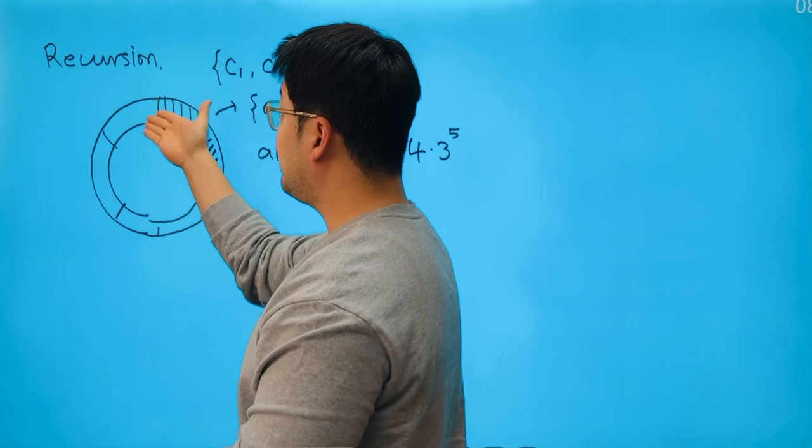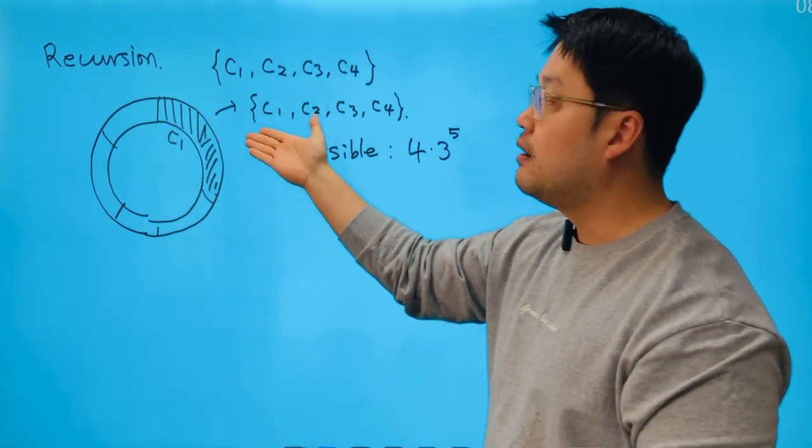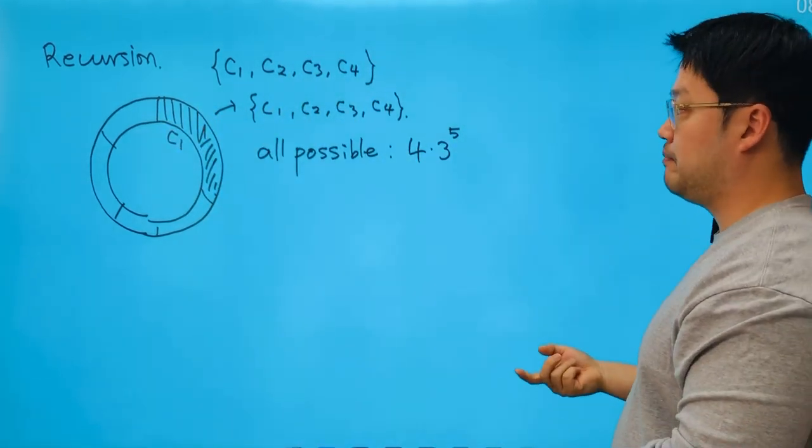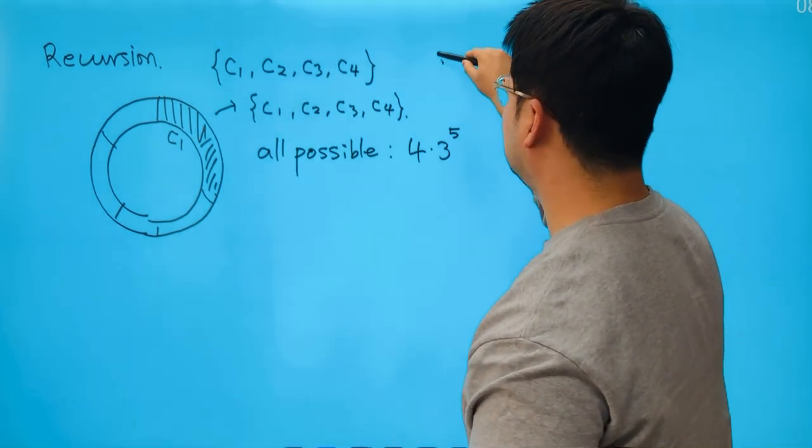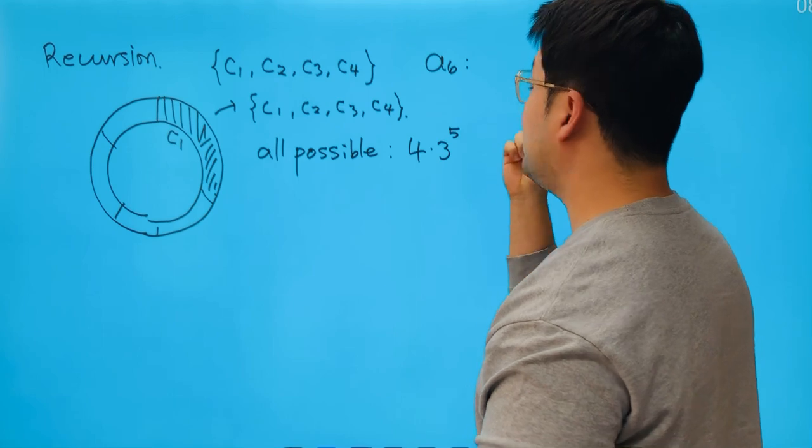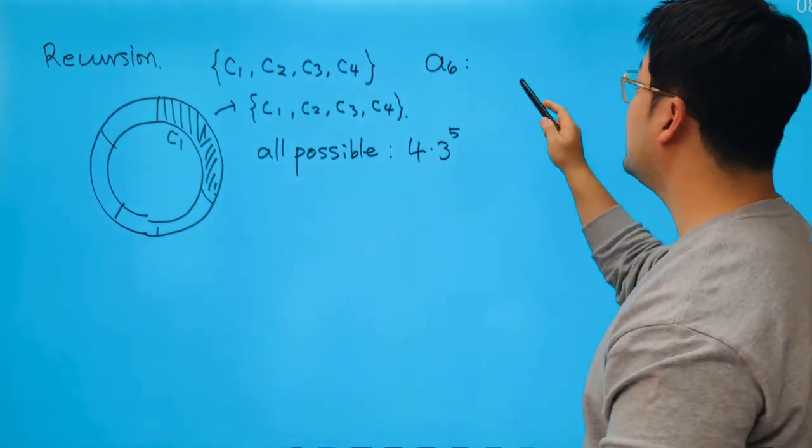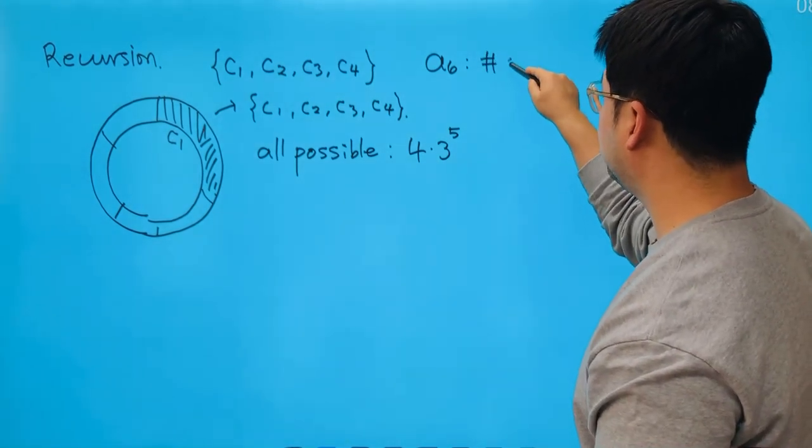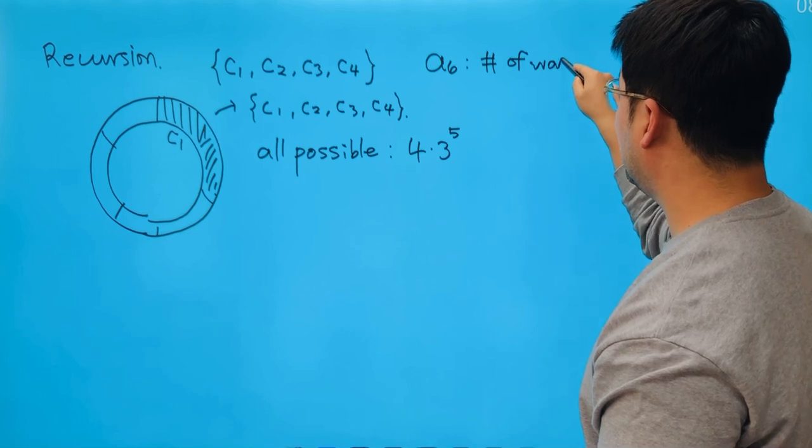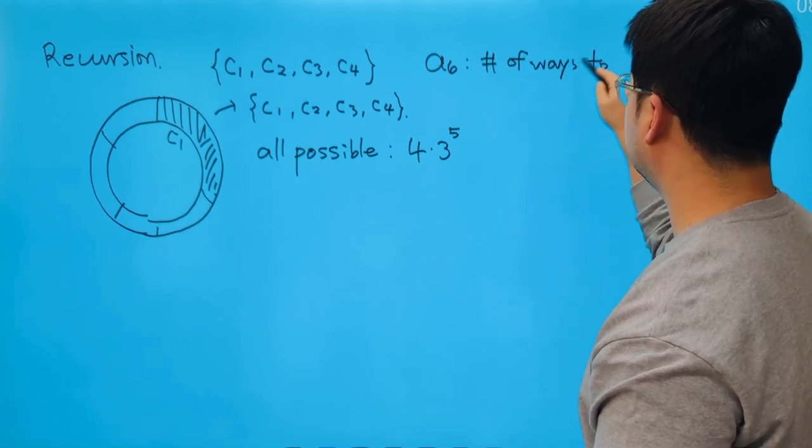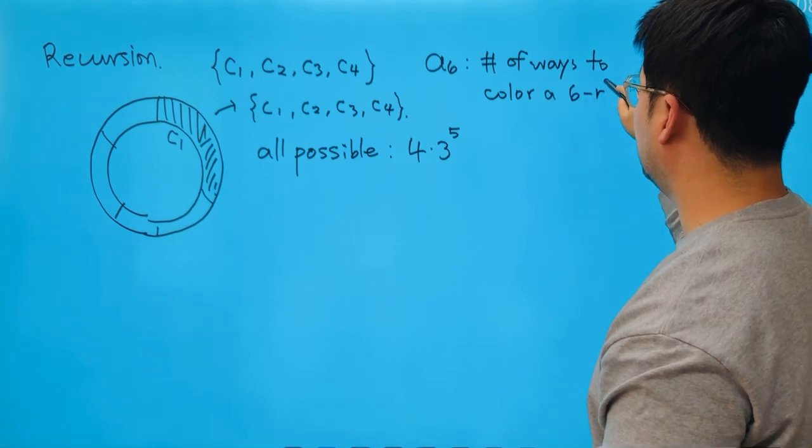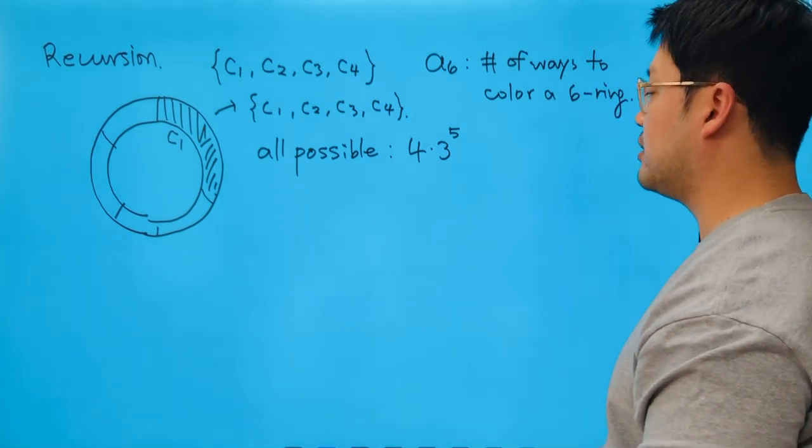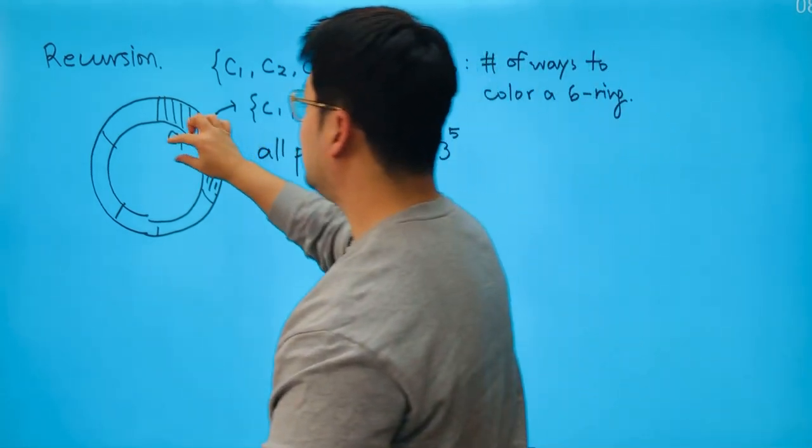some moments when we have some colors that are labeled out there and we have a problem. Now I'm going to say that A_6 is going to be the number of ways. And this is going to be step one: number of ways